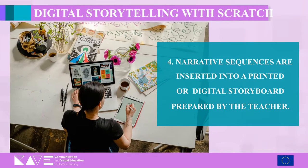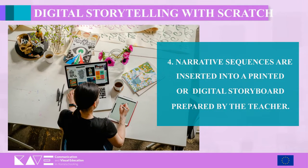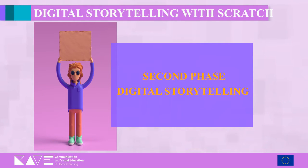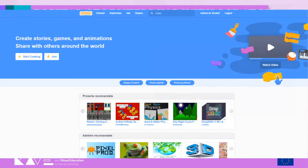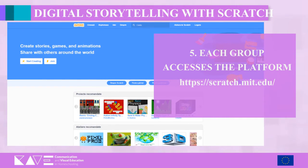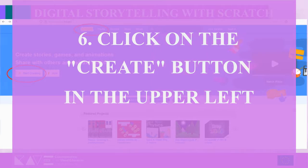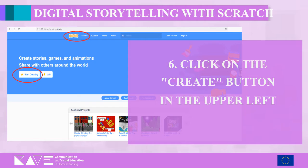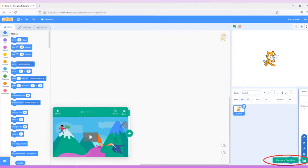Step four — narrative sequences are inserted into a printed or digital storyboard prepared by the teacher beforehand. Second phase: digital storytelling. Step five — each group accesses the platform scratch.mit.edu. Step six — click on the Create button in the upper left.